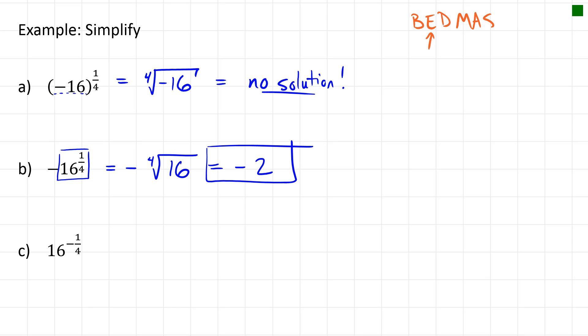And if we have 16 to the negative 1/4, well now we have to use our exponent rules, which say that if you have a negative exponent, and we've seen this before, if you have x to the power of negative n, it's equal to 1 over x to the power of n.